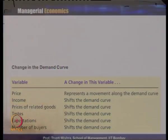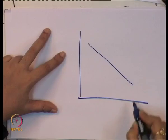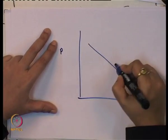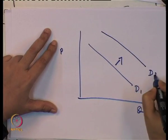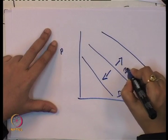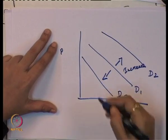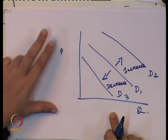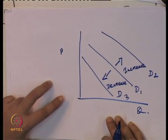Similarly, for other variables - whenever there is a change in the price of related goods, or change in taste and preference of the consumer, or any other non-price factor - the demand curve shifts to the right if there is an increase in quantity demanded, and shifts to the left if there is a decrease. Generally, if demand increases the demand curve shifts to the right; if demand decreases the demand curve shifts to the left.